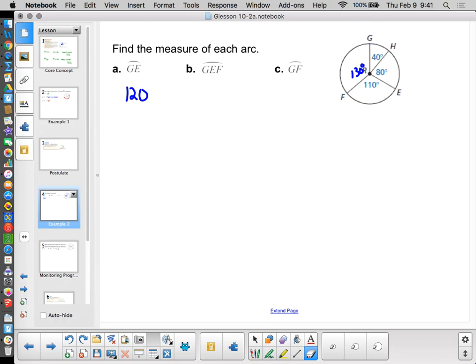Let's try the next one. GEF. Okay, so again, starting at G, going through E, but this time ending up at F. Well, that's 40 plus 80 plus 110, and we just did that. That's 230.